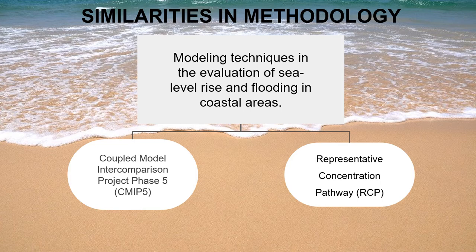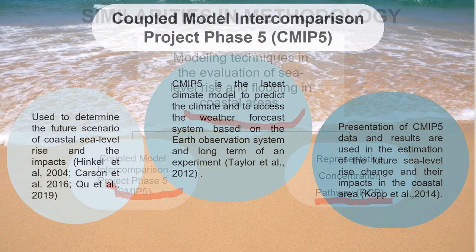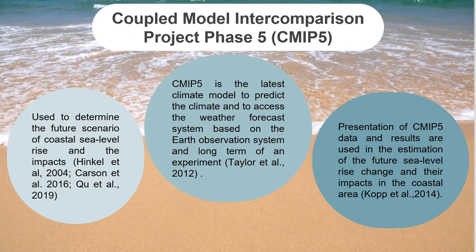Now, moving to our discussion part. We found that four journals use two of the same methodologies in the evaluation of sea level rise and flooding in coastal areas, which are CMIP5 and RCP. CMIP5 is a modeling technique used to determine the future coastal sea level rise and its impacts. It is the latest climate model to predict the climate based on current art and science technology, such as Earth observation systems and long-term experimental analysis. The data and results are shown in graph and table format, allowing us to estimate sea level projection and its effect on the coastal region.